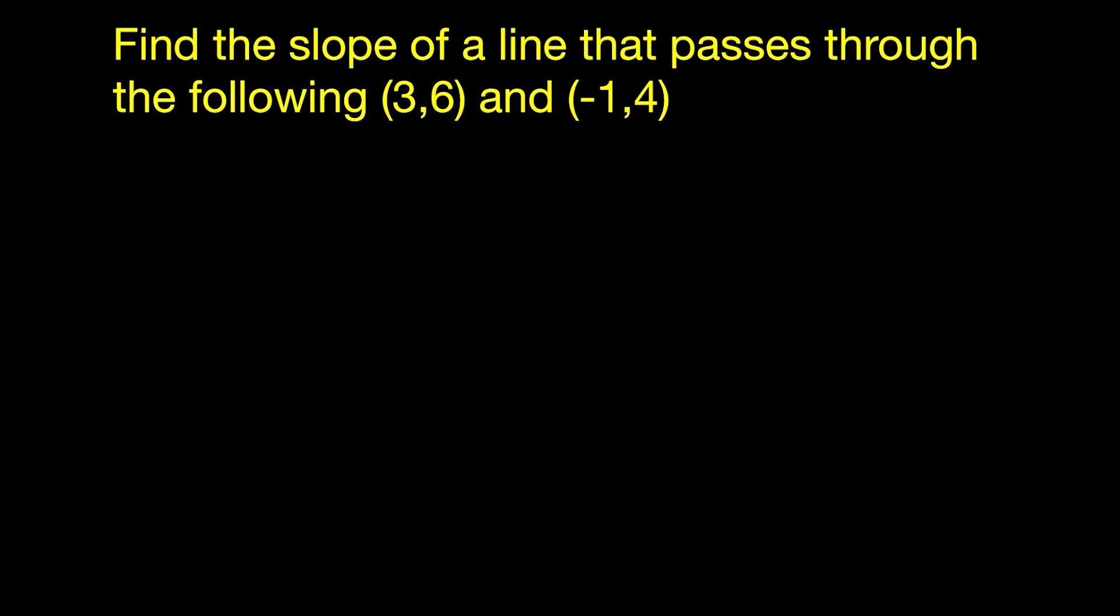Find the slope of a line that passes through the following (3,6) and (-1,4). What you have to realize is that these numbers in parentheses, 3,6 and -1,4, are what we call ordered pairs.